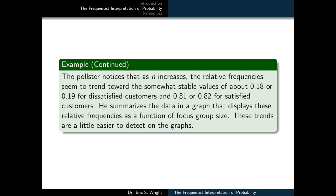So the pollster notices, and you might too if you go back and review the data, that as n, or the survey size, increases, the relative frequencies seem to trend towards the somewhat stable values of about 0.18 or 0.19 for dissatisfied customers, and 0.81 or 0.82 for satisfied customers. He summarizes the data in a graph and displays these relative frequencies as a function of focus group size. These trends are a little easier to detect on graphs.